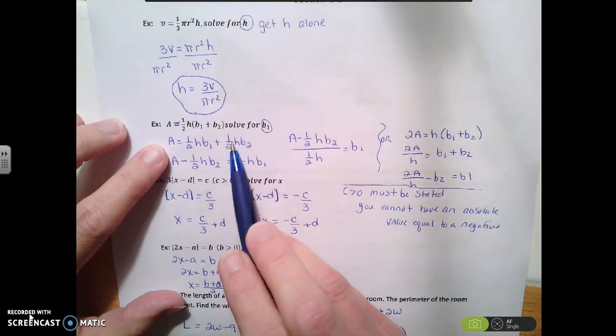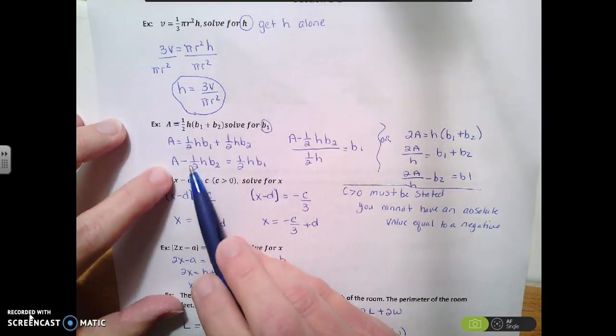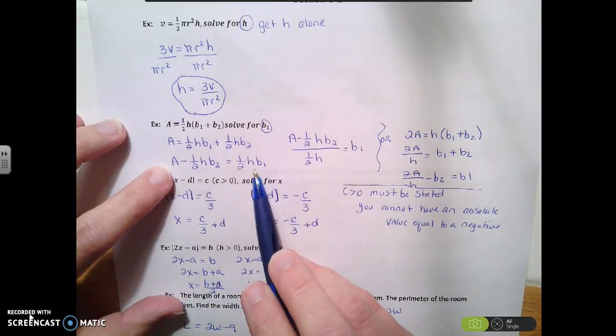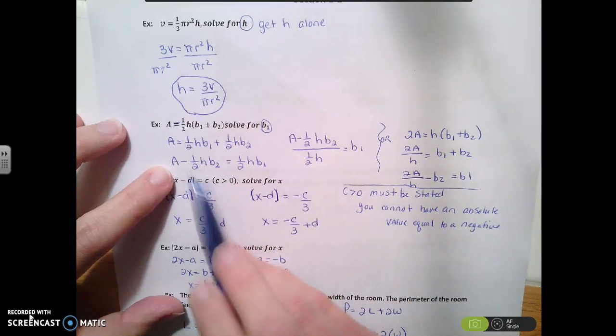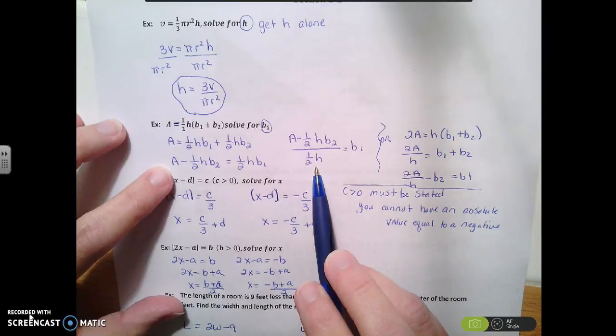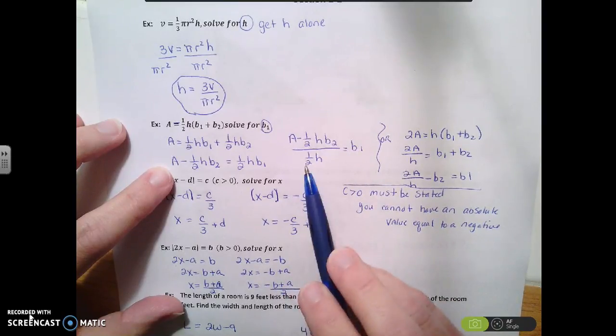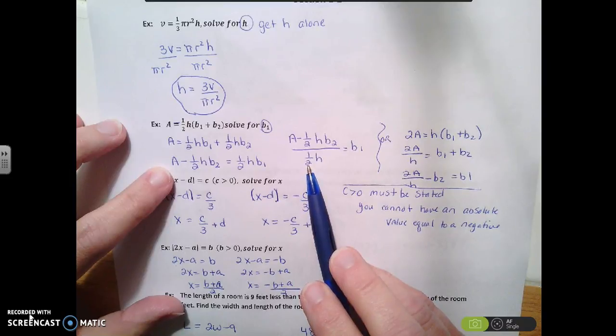I want b1 by itself, so I'm going to move this to the other side. So I'm going to subtract the one-half hb2. So now I end up with this. And then I want to divide all of this by that one-half h. So I end up with b1 is equal to all of this, which I know doesn't look pretty, but that's an answer.